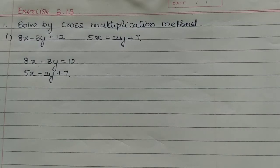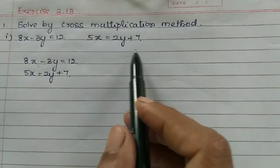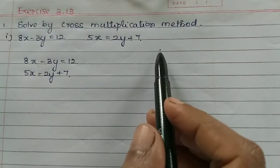Students, in this video we will first look at the exercise of 3.13. The first problem is: 8x - 3y is equal to 12, and 5x is equal to 2y plus 7.